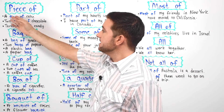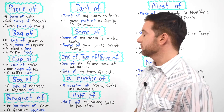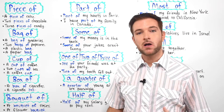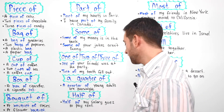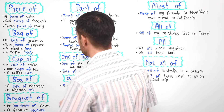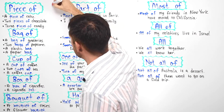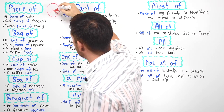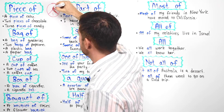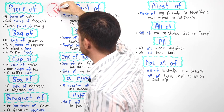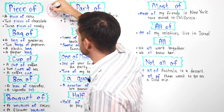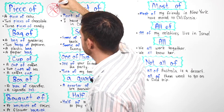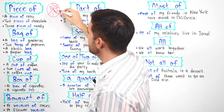First we have "piece of." Piece of is when you're talking about a small portion of something, or a portion in general. So let's say that we have a pie here. This would be one piece of the pie. This would be two pieces of the pie, and this would be three pieces of pie — or you can have four, or you can have five. So each one is a piece.